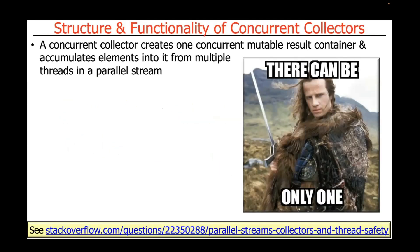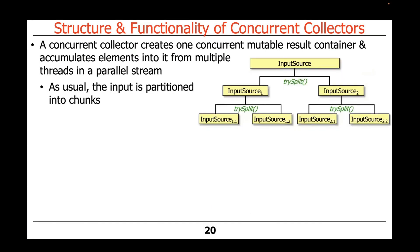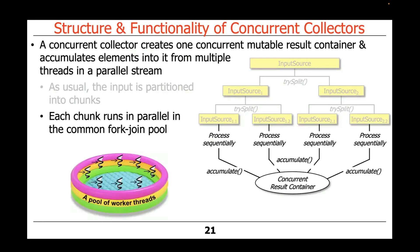Therefore, we have concurrent collectors. Concurrent collectors create a single mutable result container and accumulate the elements into it from multiple threads in a parallel stream. As before, the input is partitioned up into chunks, and the chunks run in the common fork-join pool.